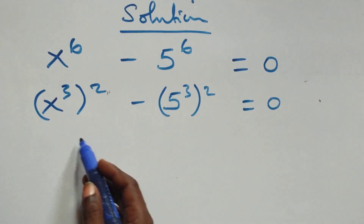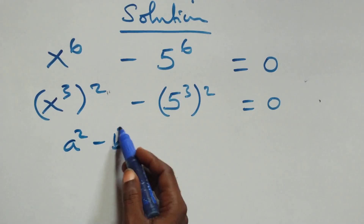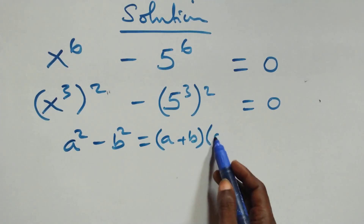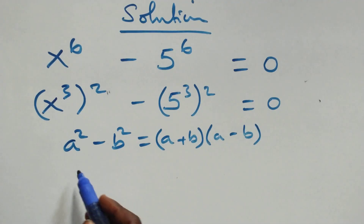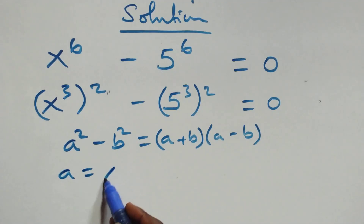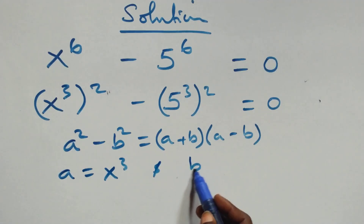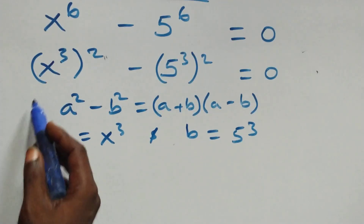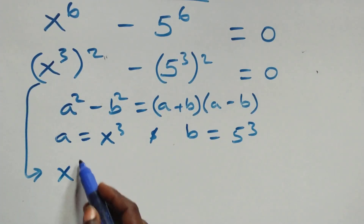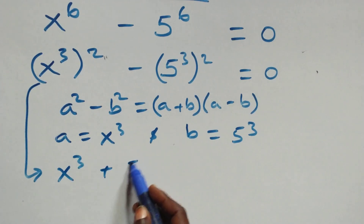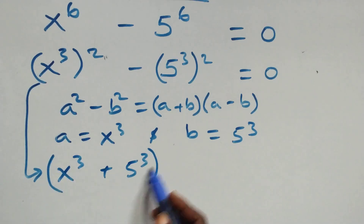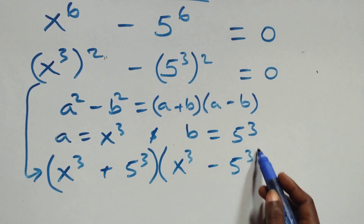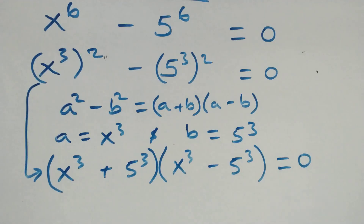This follows when we have a squared minus b squared, presented as a plus b into bracket a minus b. Here a stands as x raised to power 3 and b stands as 5 raised to power 3. So the equation becomes x raised to power 3 plus 5 raised to power 3, times x raised to power 3 minus 5 raised to power 3, equals zero.